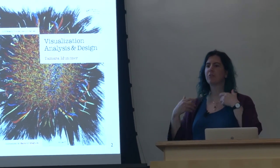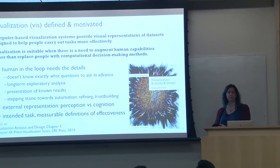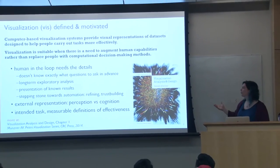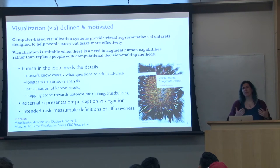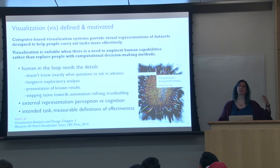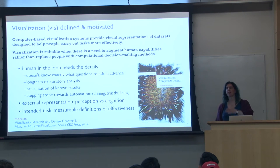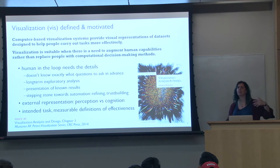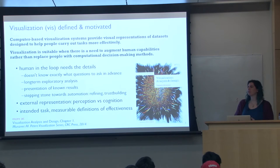There are interesting uses of VIS where you're trying to get yourself out of a job — helping the builder of an automatic model understand more about a situation, or helping algorithm developers refine the algorithm itself, or building trust with users that the model is doing something sensible. A lot of the issues at play involve using something external to somebody's head, swapping in a perceptual act for a cognitive one whenever possible. VIS is about the task as much as the data, and measuring effectiveness.